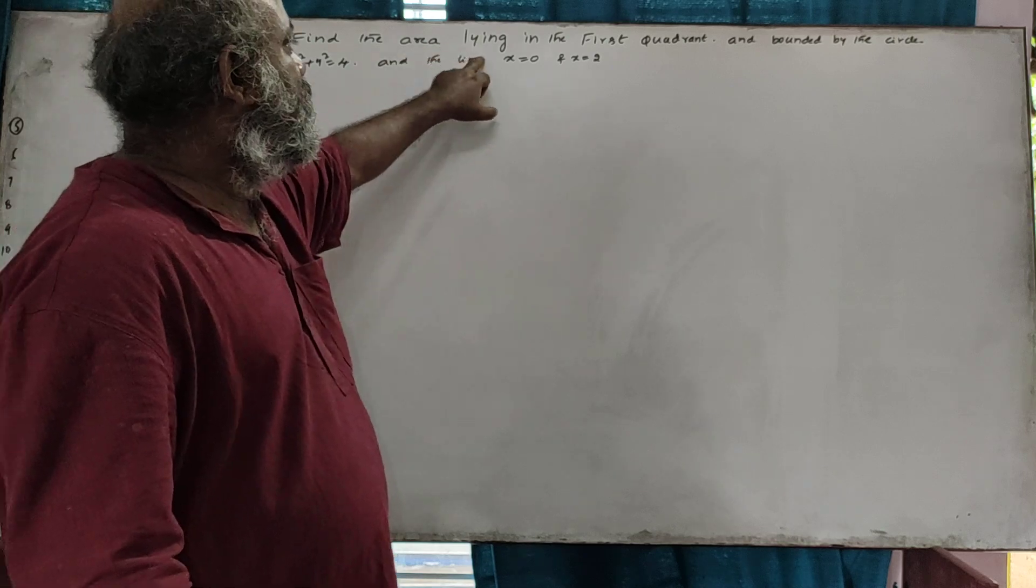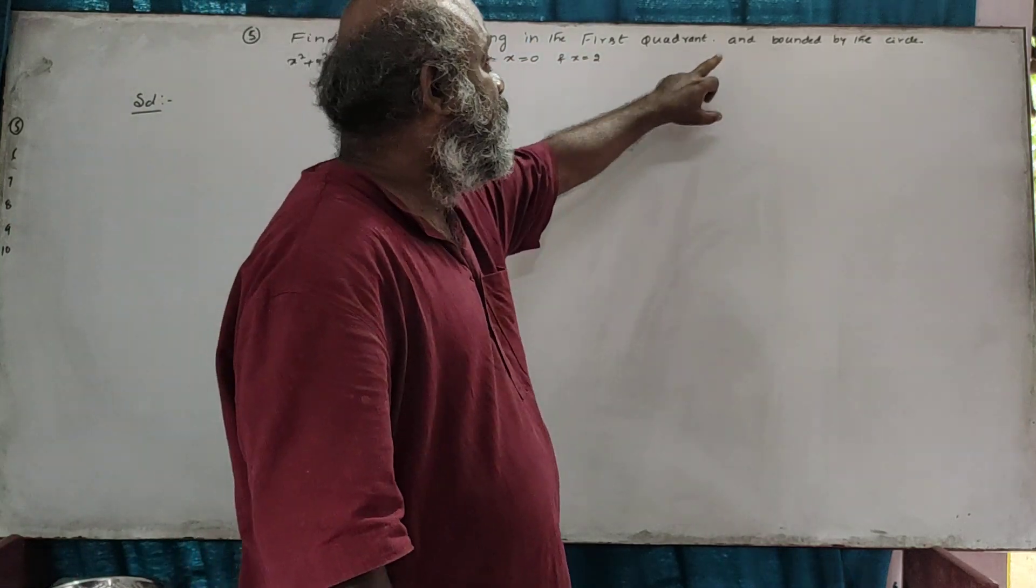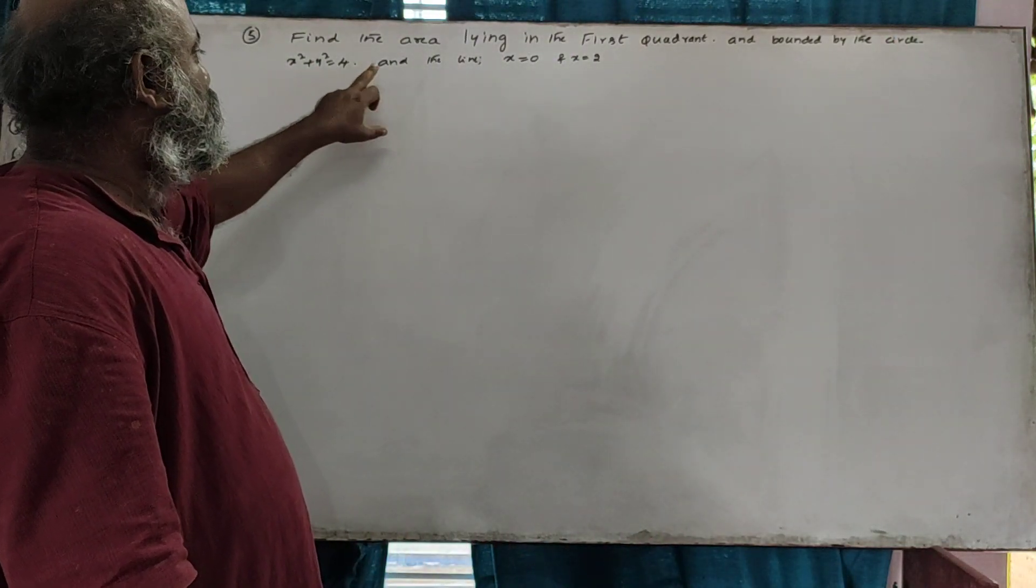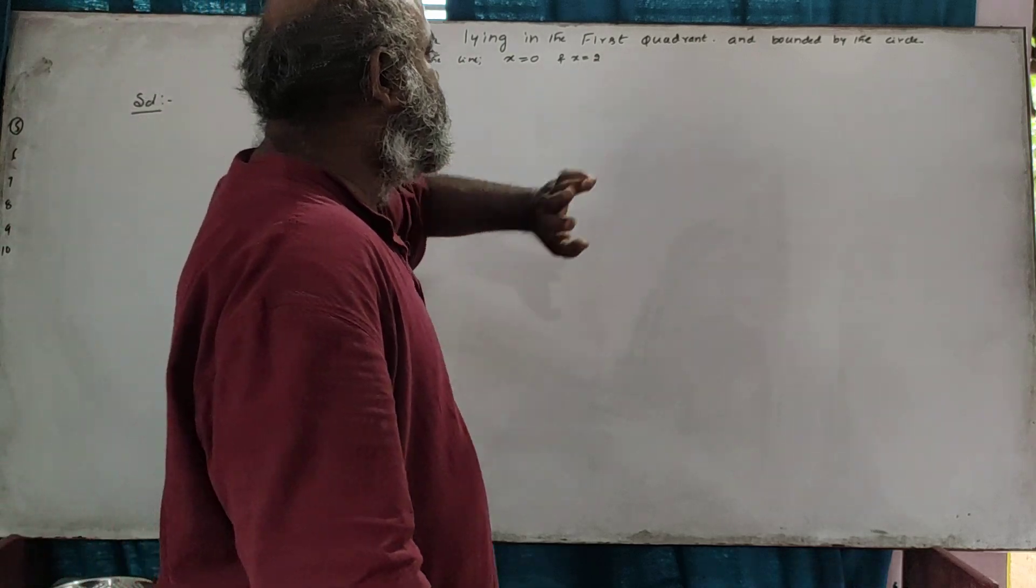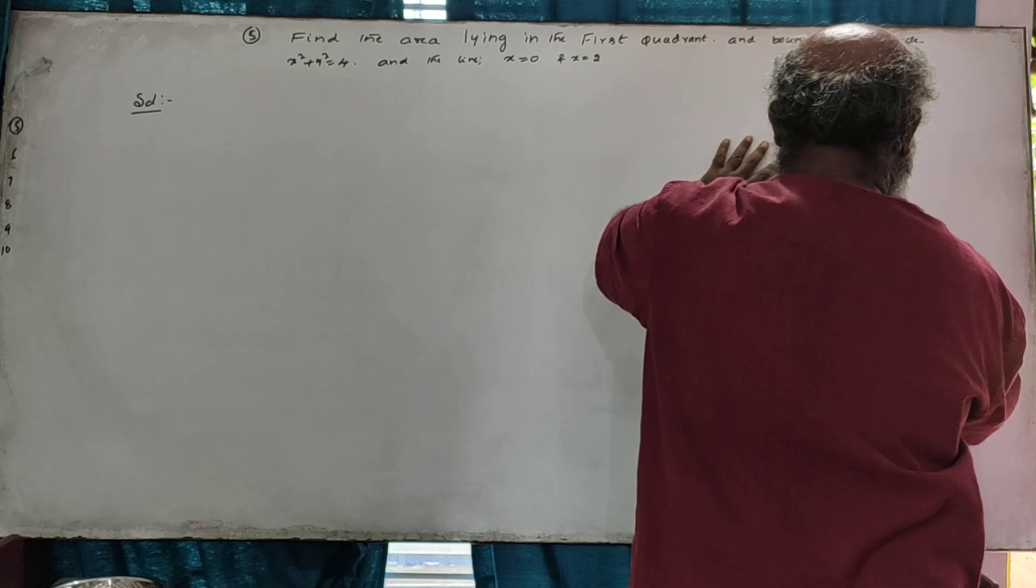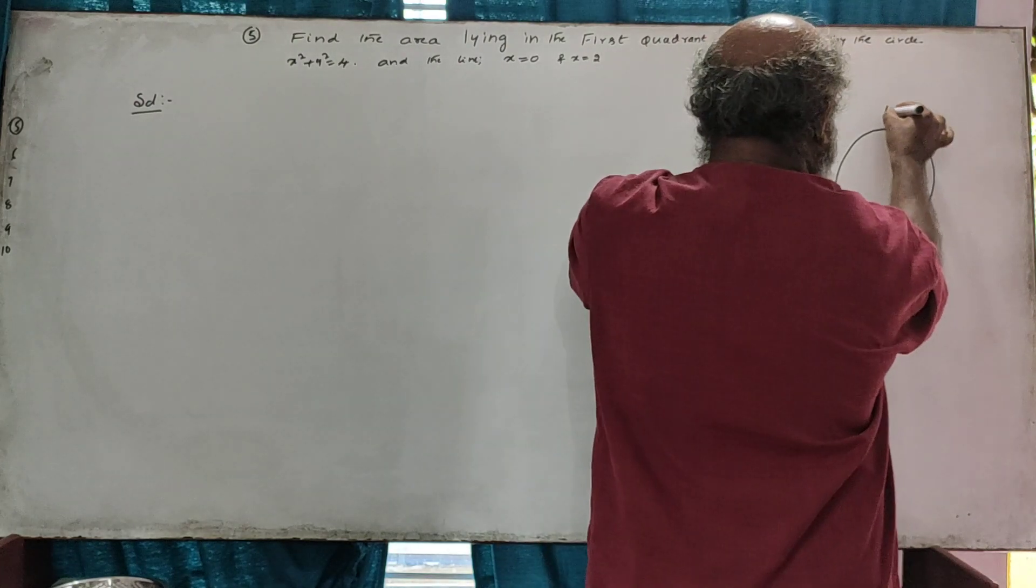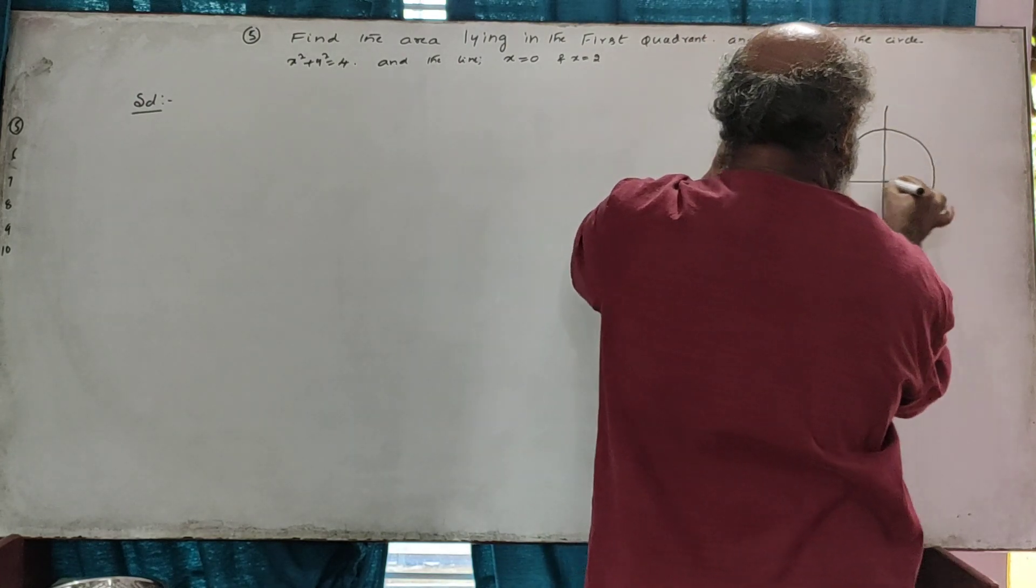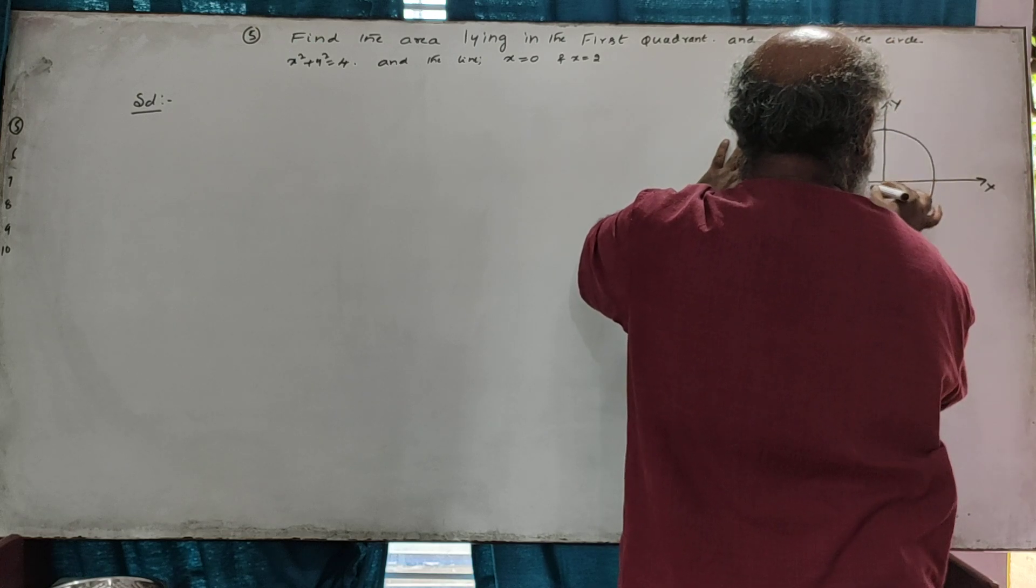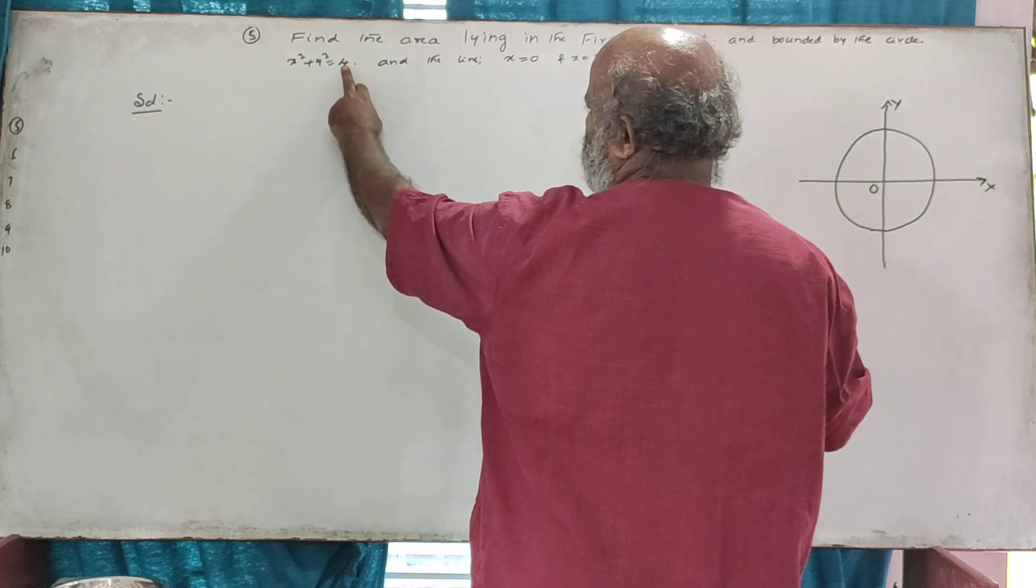Find the area lying in the first quadrant and bounded by the circle x squared plus y squared equals 4, and the lines x equals 0 and x equals 2.